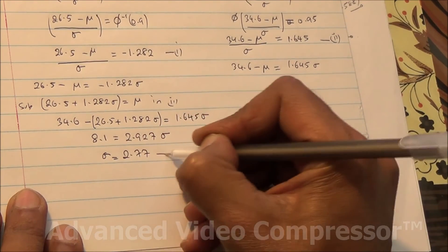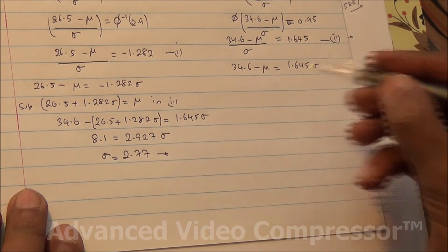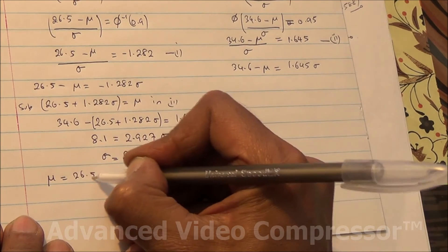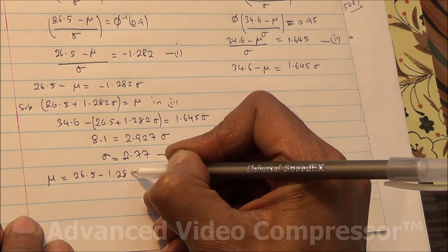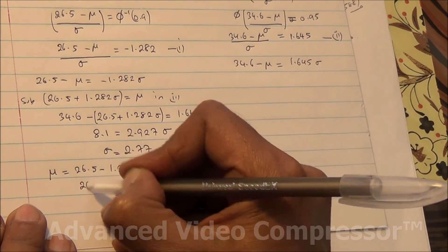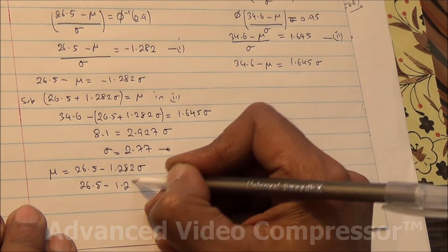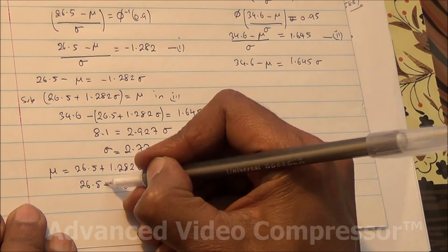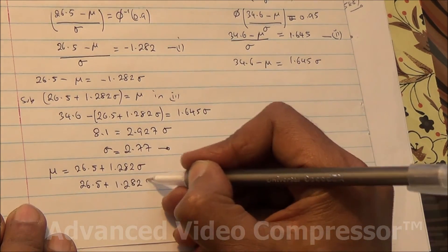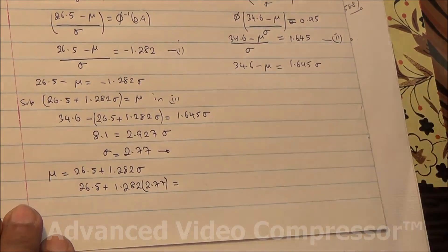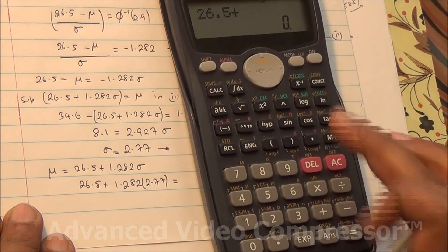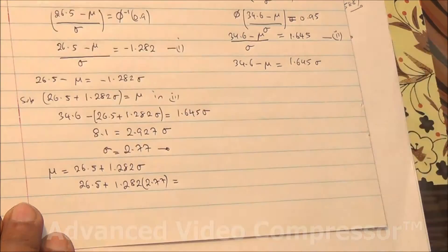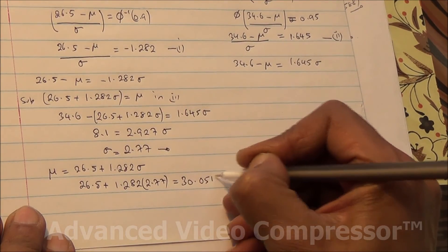We have the standard deviation as 2.77. Now finding mu: mu = 26.5 + 1.282 × 2.77 = 26.5 + 3.551 = 30.05. Therefore mu is approximately 30.0.